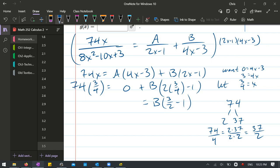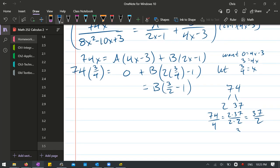Now I need to multiply 37 times 3. Oh look at that, 111. So 111 over 2 equals B. 3/2 minus 1 is 1/2.